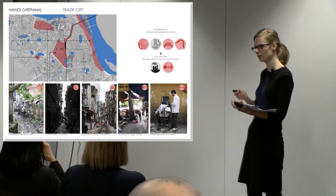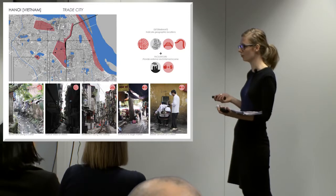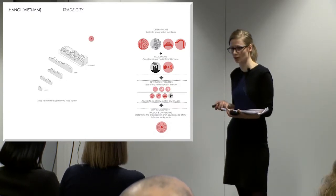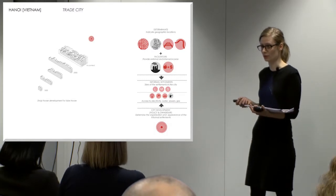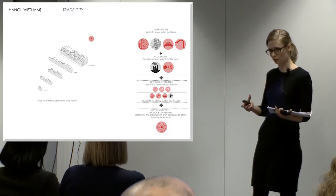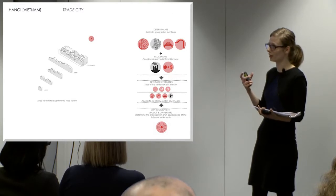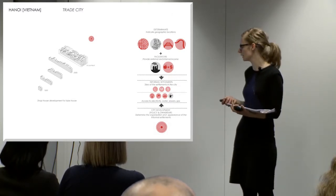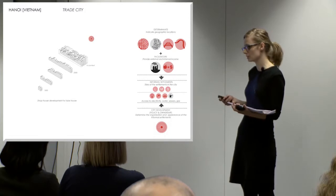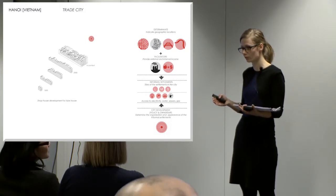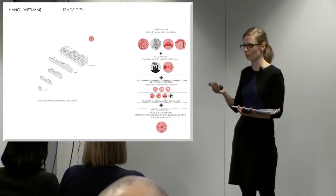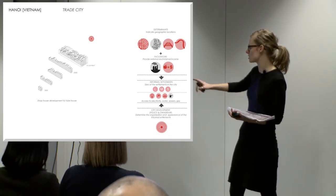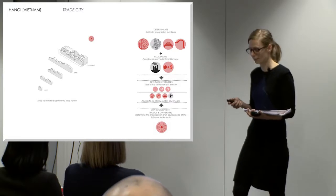Why did these tube houses form? Apparently in the 1800s, people used to build shop houses with a small retail unit at the front, a living unit at the top, and a garden at the back. But later on, a policy was released limiting the shop frontage. So over time, people started building upwards and backwards, and we are left with these extremely dense tube houses.